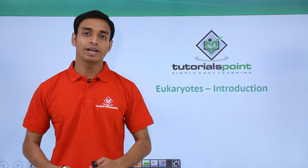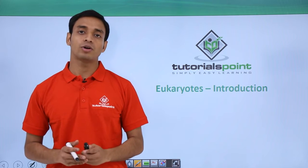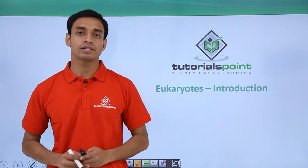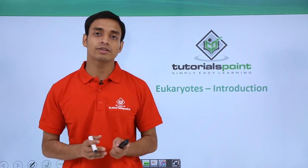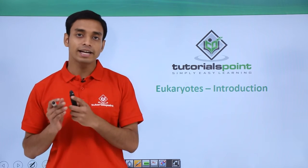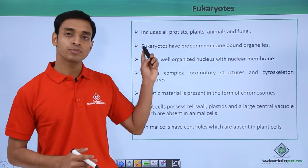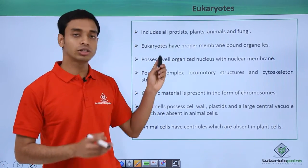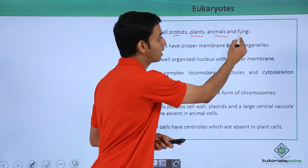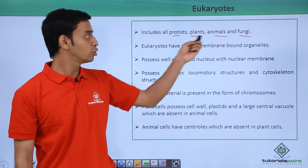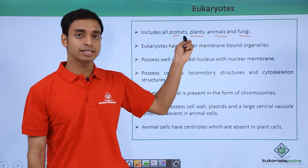Welcome to Tutorials Point. In this video we are going to talk about a typical group of organisms known as eukaryotes. Let us see the characteristic features of eukaryotes. Eukaryotes include the group of organisms like protists, plants, animals, and also fungi.